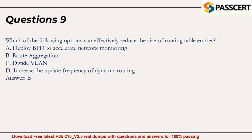Question 9. Which of the following options can effectively reduce the size of routing table entries? A. Deploy BFD to accelerate network monitoring. B. Route aggregation. C. Divide VLAN. D. Increase the update frequency of dynamic routing. Answer: B.